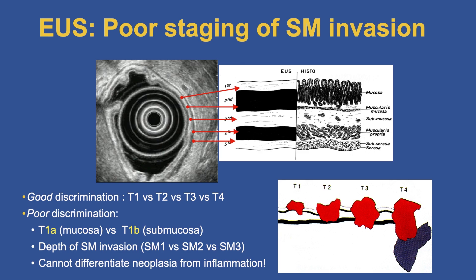We can discriminate T1 versus T2 versus T3 and T4, but we are very poor at discriminating T1A, which is mucosal invasion, from T1B, which is submucosal. We cannot differentiate the sublayers of the submucosa, and importantly, we're basically just seeing black and white images — we cannot differentiate neoplasia from inflammation. So I always give the patient the benefit of the doubt: it may look like there's submucosal invasion, but maybe it's just inflammation accompanying the cancer.